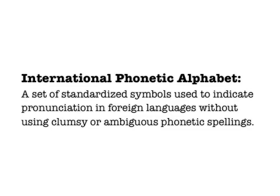The IPA is a set of symbols that can be used to indicate pronunciation of foreign languages. Classical singers will most often see the IPA used to show pronunciation of Italian, Latin, French, German, Russian, and occasionally Spanish or other languages. If you do research on the IPA, you'll find out that the version singers use is simplified compared to the very complete IPA that these French linguists developed.